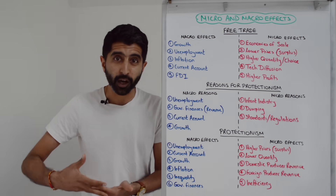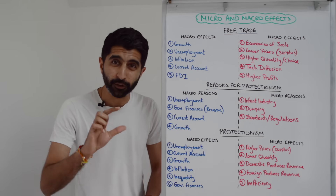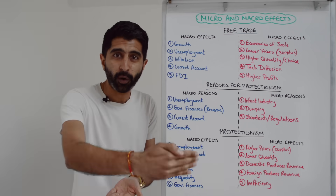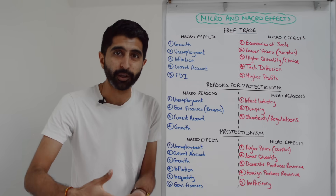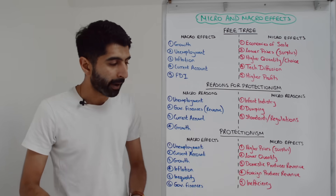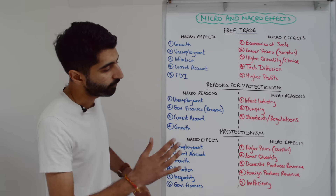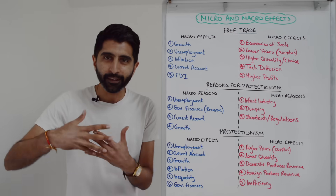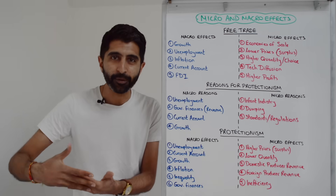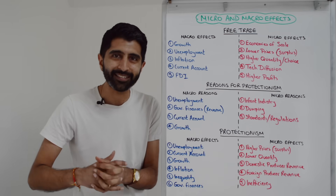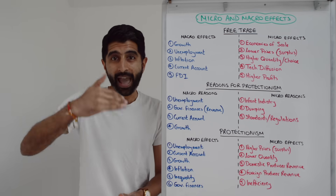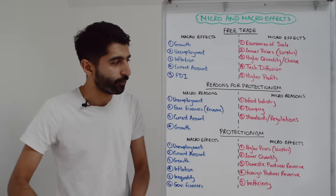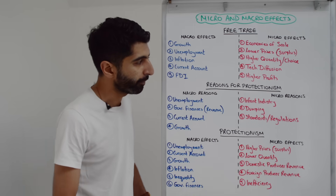To reduce a current account deficit is quite a common macro reason for protectionism. Going further, we can link to economic growth as a macro reason too — by squeezing imports, ceteris paribus, as long as exports stay the same, X minus M can increase, taking you to higher economic growth.